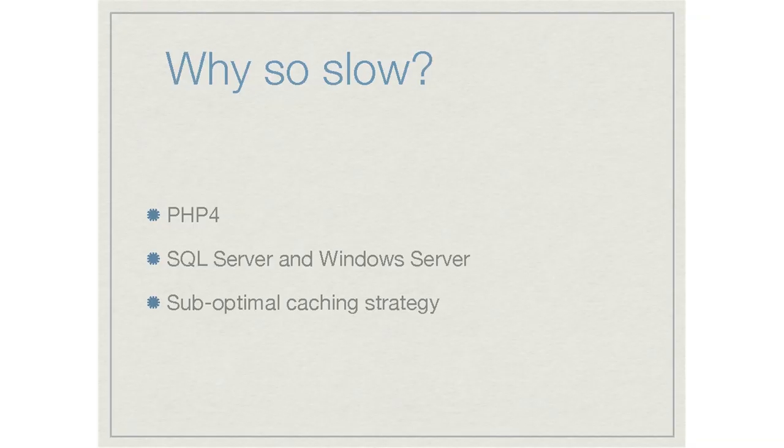Finally, we had a sub-optimal caching strategy. The basic approach was to take the response that came back and hash it. If we found a matching hash on a subsequent request, we'd return it — but it only worked for a single response. If the response contained dynamic data specific to a user, we couldn't cache anything because we didn't want to share user details around. So the caching strategy wasn't as evolved and clever as it could be.